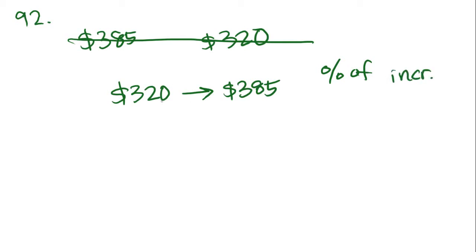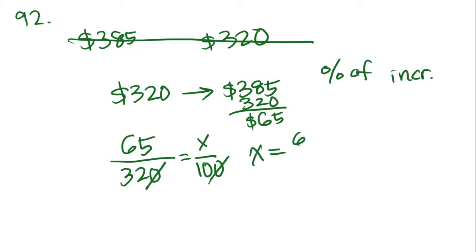First thing we want to see here is by how much the amount actually increased, and we do that by simple subtraction. And we find that from last year to this year, it increased by $65 million. So then what we do is we take that increase and we put it over the original amount, and we set a ratio to find the percentage of increase. Let's get rid of the zero, and we get x equals 650 over 32.